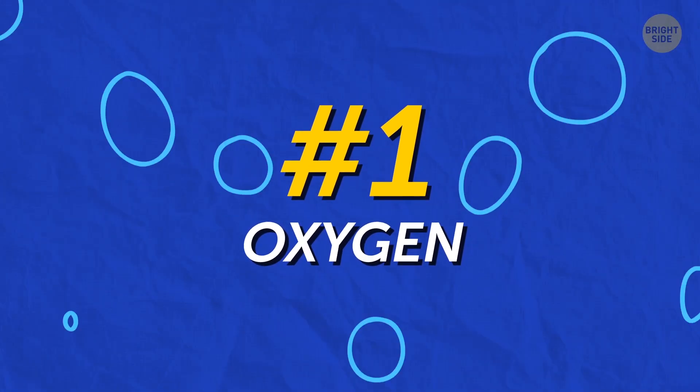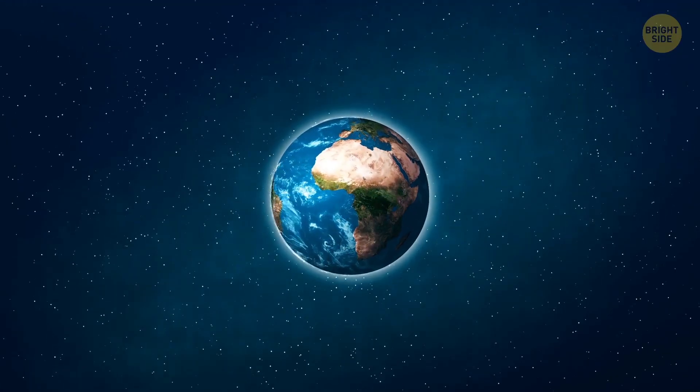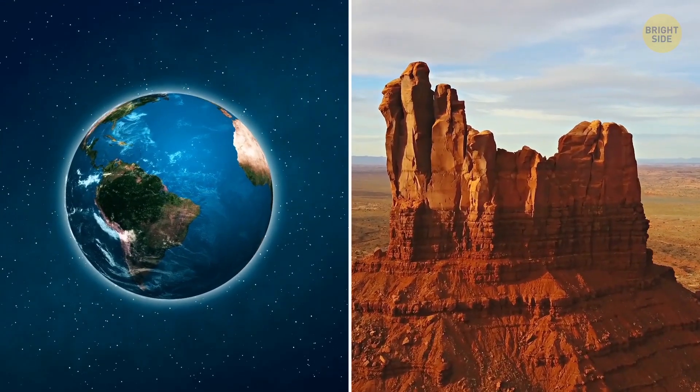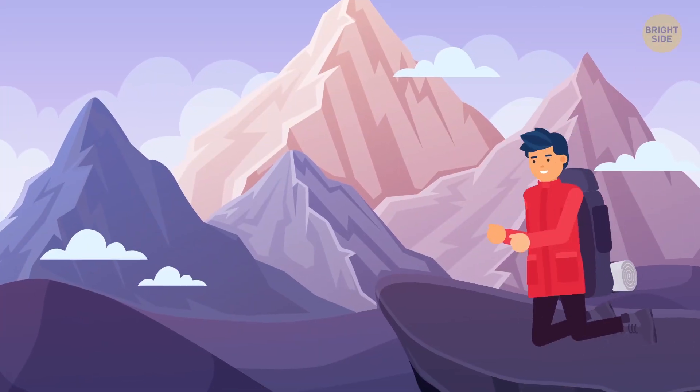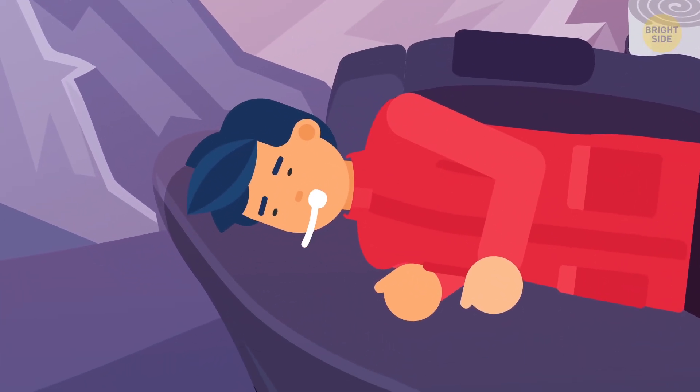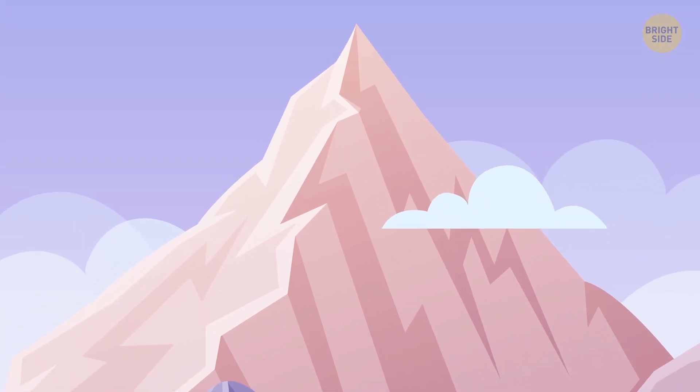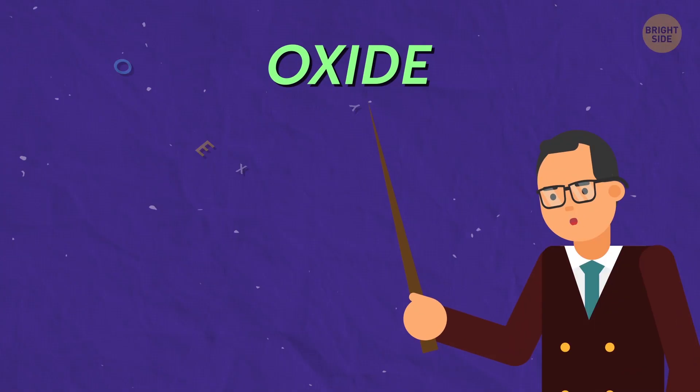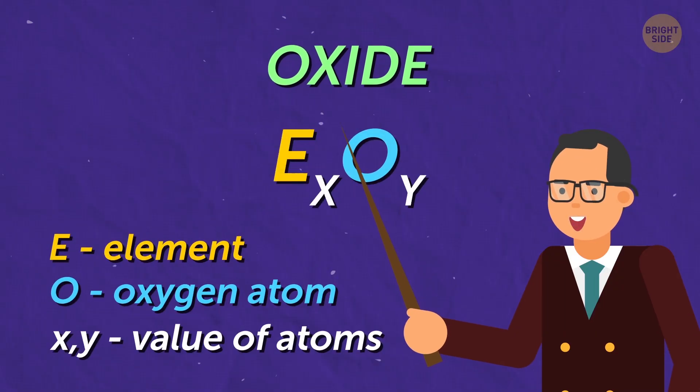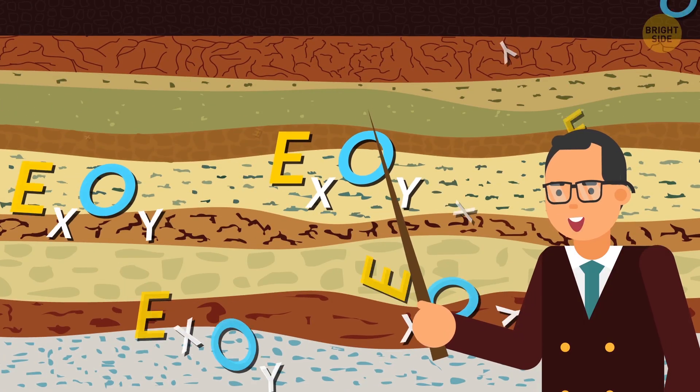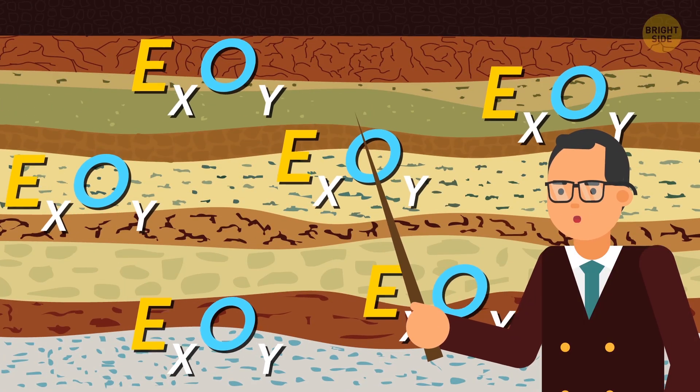Oxygen would be number one on that list. Apart from its presence in the atmosphere as a gas, it's also present in rocks. Now, don't go sniffing them because that's just weird. It's there as an oxide. Oxide is a chemical compound that has at least one oxygen atom and one other element. These guys are very common in the Earth's crust, and they have a solid state.